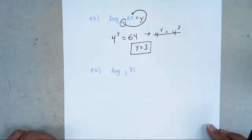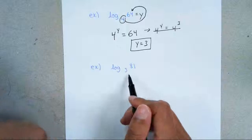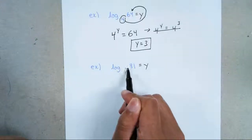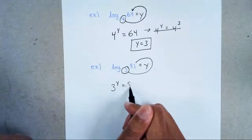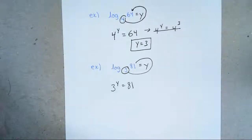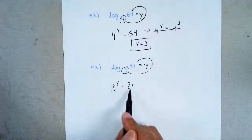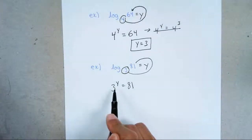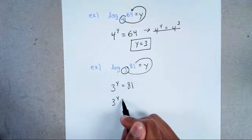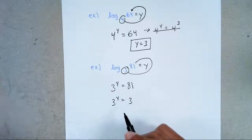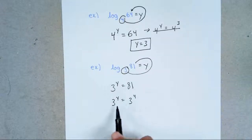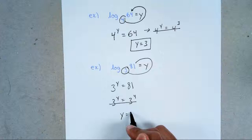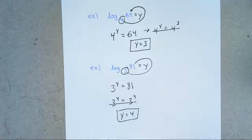Now we're going to take a look at another example: log base 3 of 81. The first thing I'll notice is it's not equaling anything, so I'm going to set this equal to y. I'll circle my base, go around the world: 3y equals 81. So, 3 to what power gives me 81? You're going to change 81 to the smaller base. 3 to the 4th gives you 81, so 3y equals 3 to the 4th. Once you have the same bases, cancel them out, set the exponents equal — y equals 4. That's your final answer.